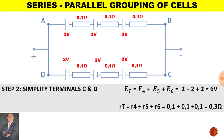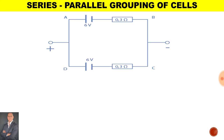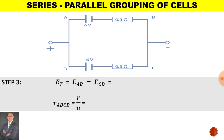The total EMF for terminals C and D is 6 volts with an internal resistance of 0.3 ohms. We can now simplify our diagram — we have two cells in parallel, each with an EMF of 6 volts and internal resistance of 0.3 ohms. Therefore in step 3, the total EMF will be 6 volts and the total internal resistance will be 0.3 divided by 2 cells, giving us 0.15 ohms.